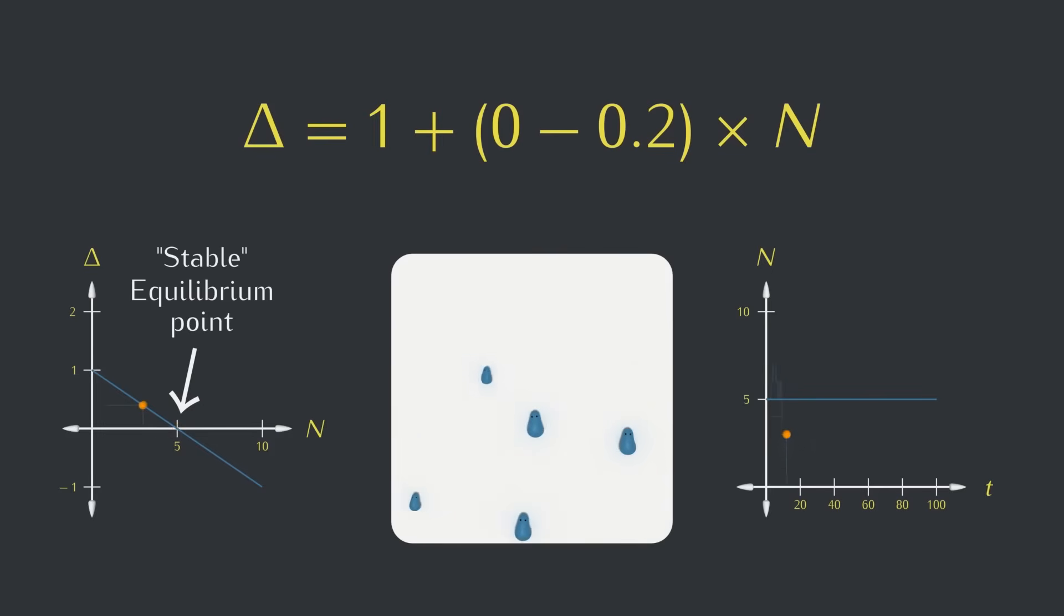This straight line might seem naive because we've seen how these simulations can fluctuate like crazy, but if we graph the data from a whole bunch of simulations at the same time, we can start to see that this really is a pretty good guess for what to expect on average.